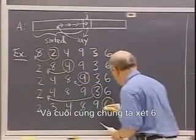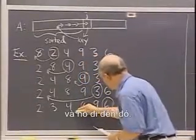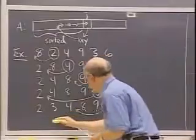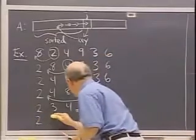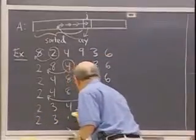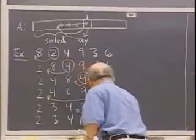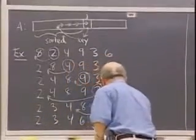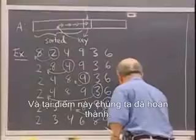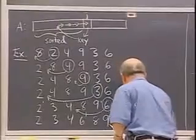And finally, we look at the six. That goes in there: 2, 3, 4, 6, 8, 9. And at that point, we are done.